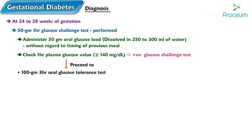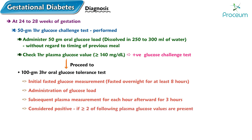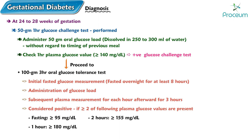Note that some providers use a lower cutoff value for a positive glucose challenge test. The 100-gram, 3-hour oral glucose tolerance test consists of an initial fasted glucose measurement, followed by administration of the glucose load and subsequent plasma measurements each hour for 3 hours, requiring the patient to have fasted overnight for at least 8 hours. The test is considered positive for gestational diabetes if greater than or equal to 2 of the following plasma glucose values are present: fasting ≥95 mg/dL, at 1 hour ≥180 mg/dL, at 2 hours ≥155 mg/dL, and at 3 hours ≥140 mg/dL.